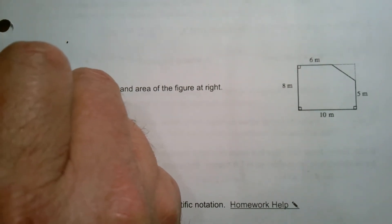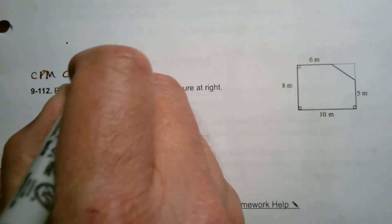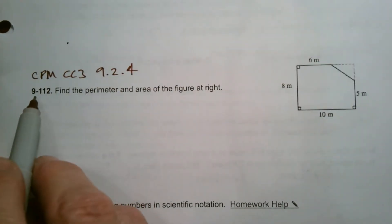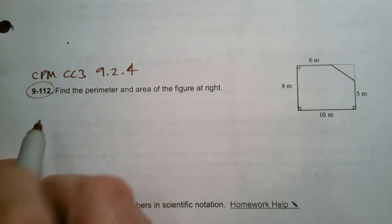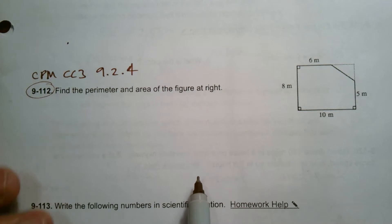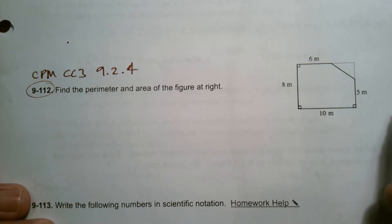So this is CPM Course 3 and this is section 9.2.4. So number 9-112. It says find the perimeter and area of the figure to the right. So first of all, let's do area of this thing.